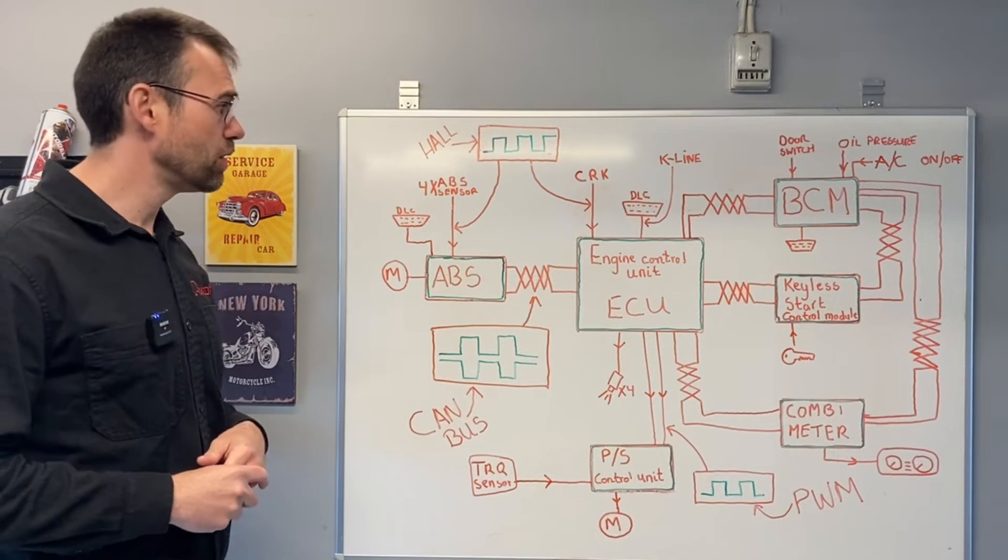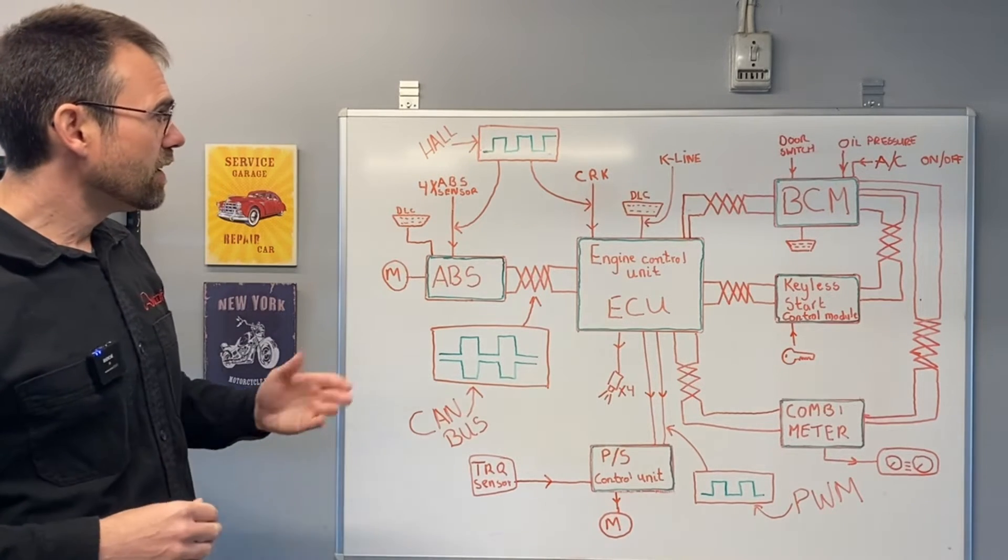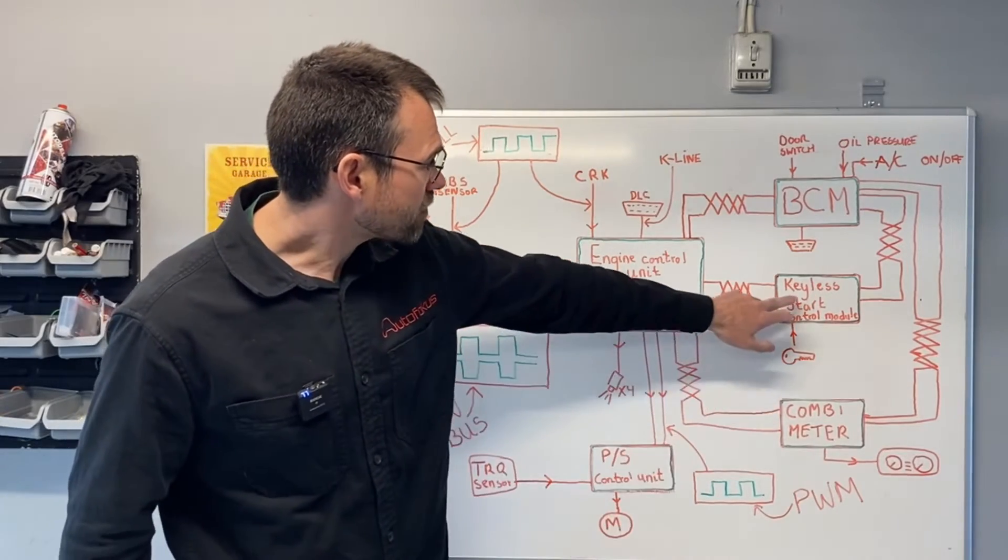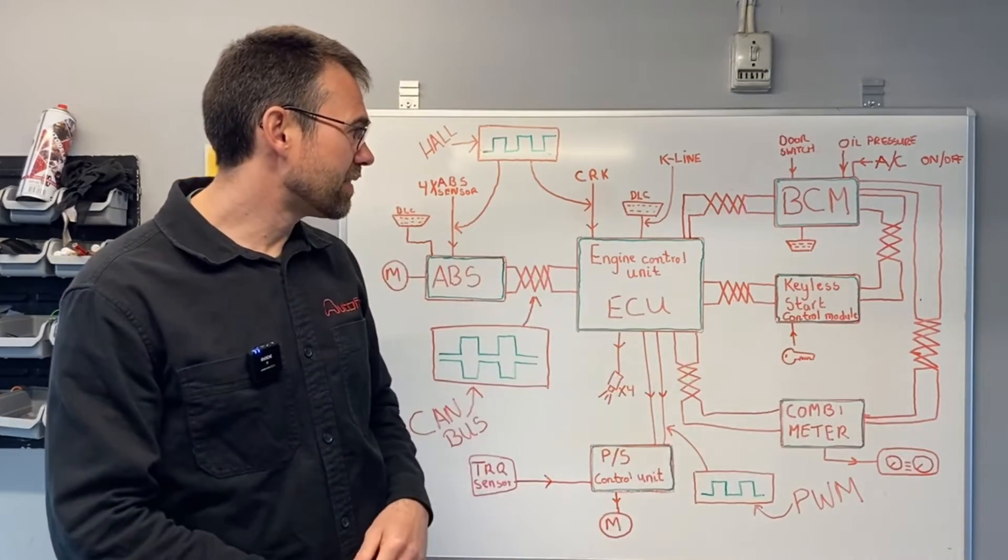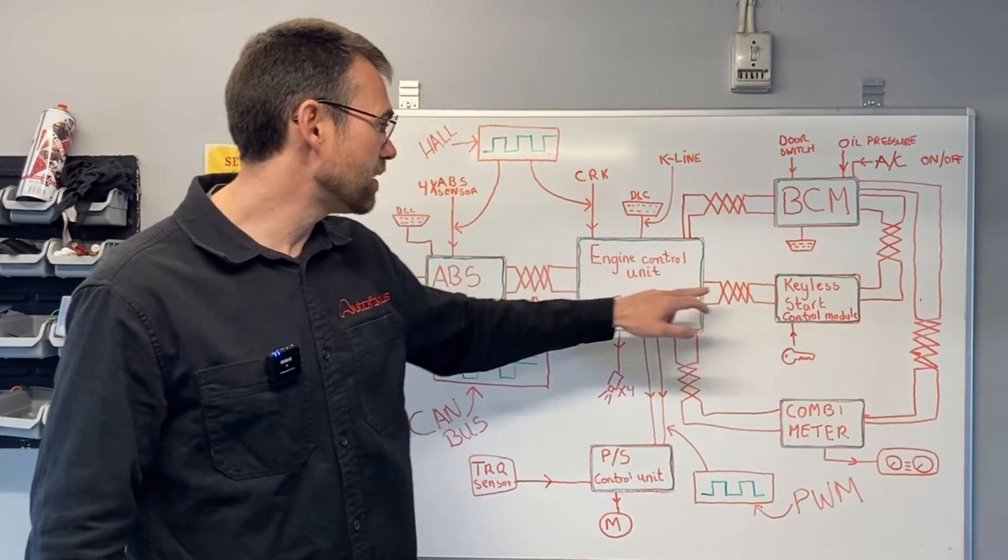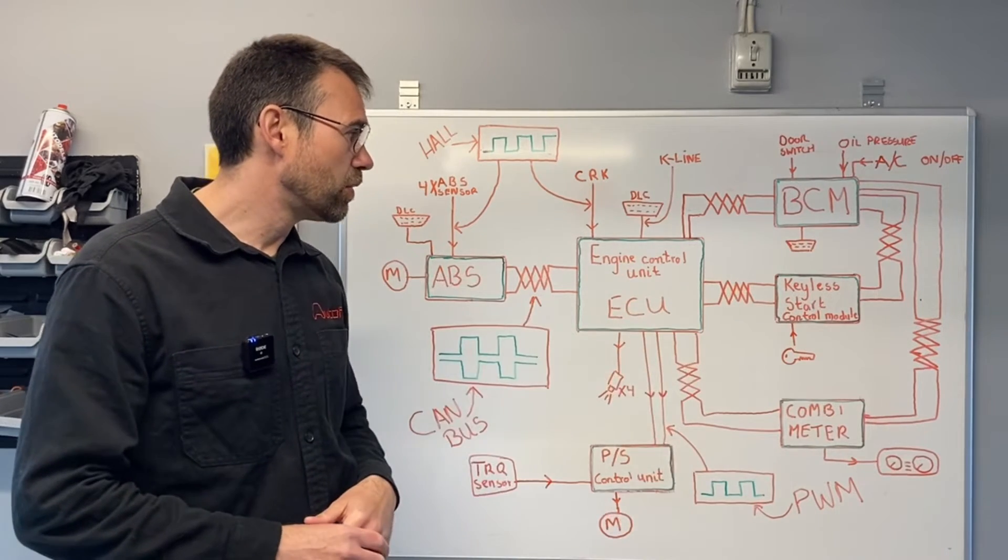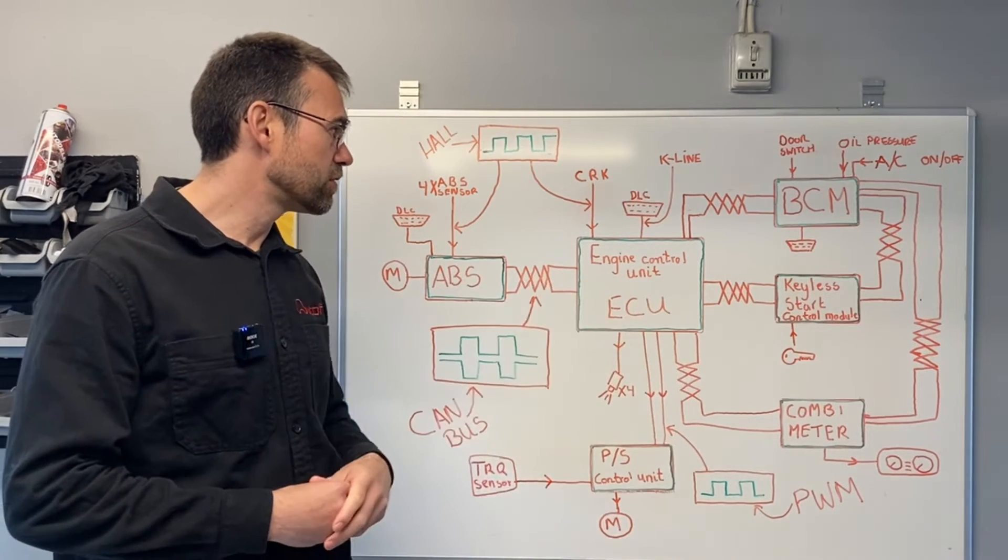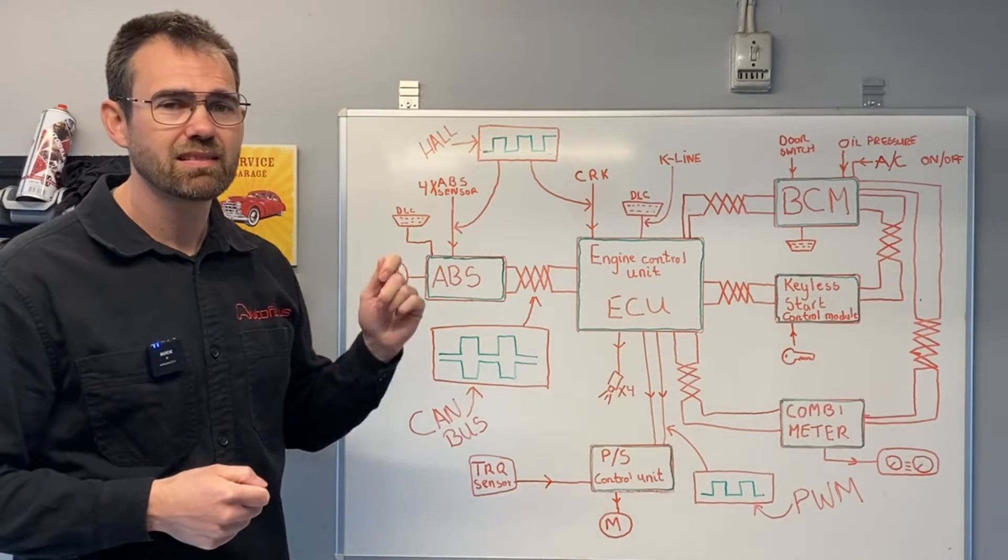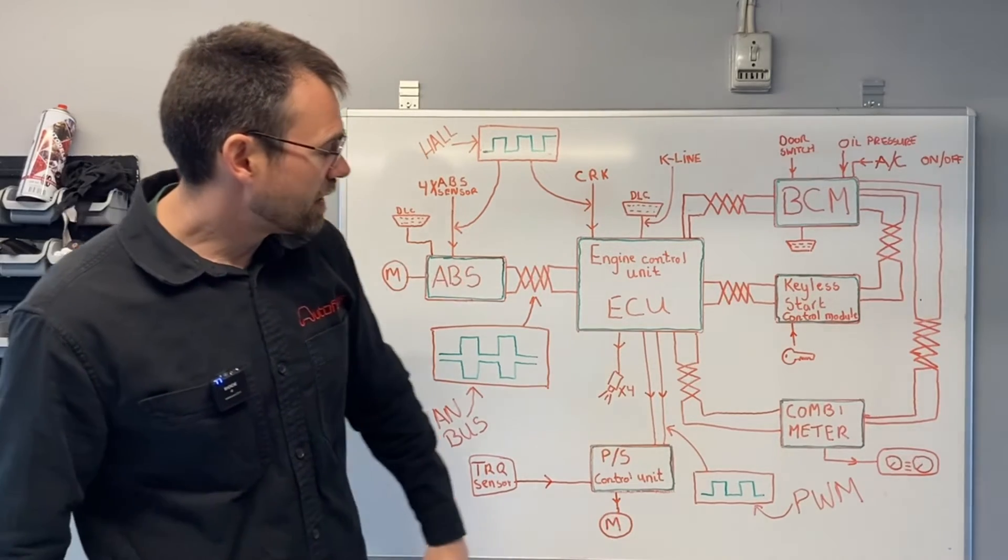When we're talking CAN bus, we have two wires: a high CAN and a low CAN. Those two wires are basically transmitting the signal. I'll give you an example. It could be that the immobilizer gets a signal from the key when I turn on the car. That signal is transmitted to the engine control unit through CAN bus so the engine control unit knows it's the right key, and then it says fine, let's inject the fuel.